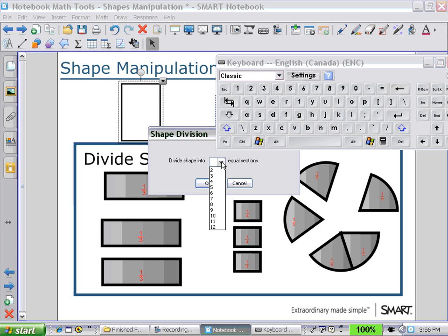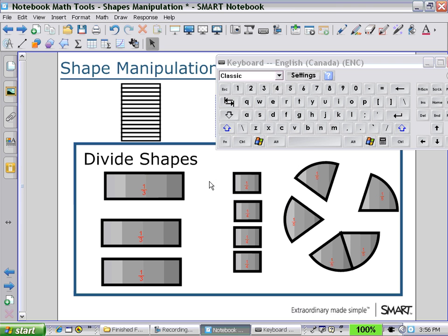And so there you see the shape divided into 14 equal pieces. And again if I grab one of them, I can separate.